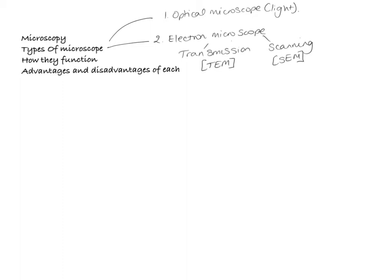Microscopes do two things. They magnify an image, so they create an image that we can see that is larger than the actual specimen that we're trying to see. And the second thing that they do is they resolve an image. They make an image clear. These are two key terms that you need to understand: magnification and resolution.